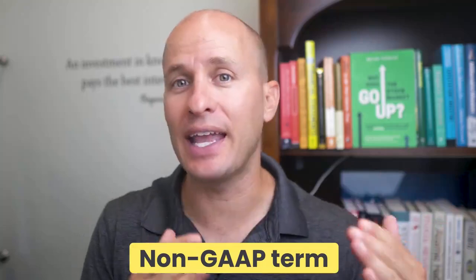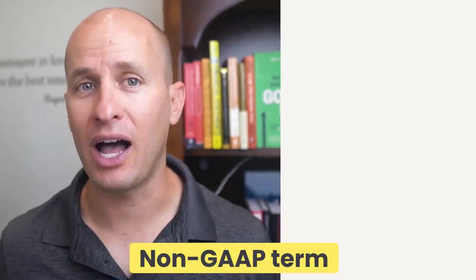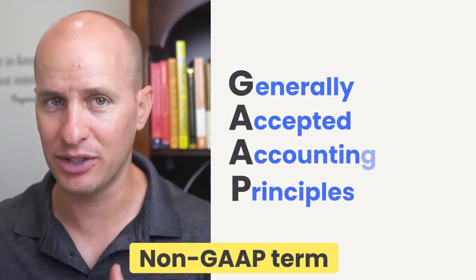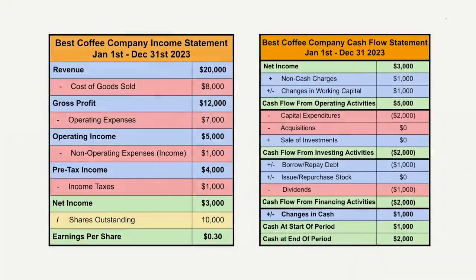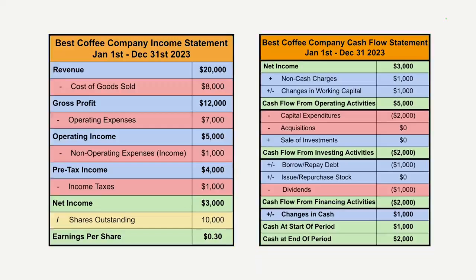EBITDA is what's known as a non-GAAP term, meaning it doesn't comply with generally accepted accounting principles. For that reason, you won't find EBITDA listed on most companies' financial statements. However, you can easily calculate a company's EBITDA by looking at its income statement and cash flow statement.